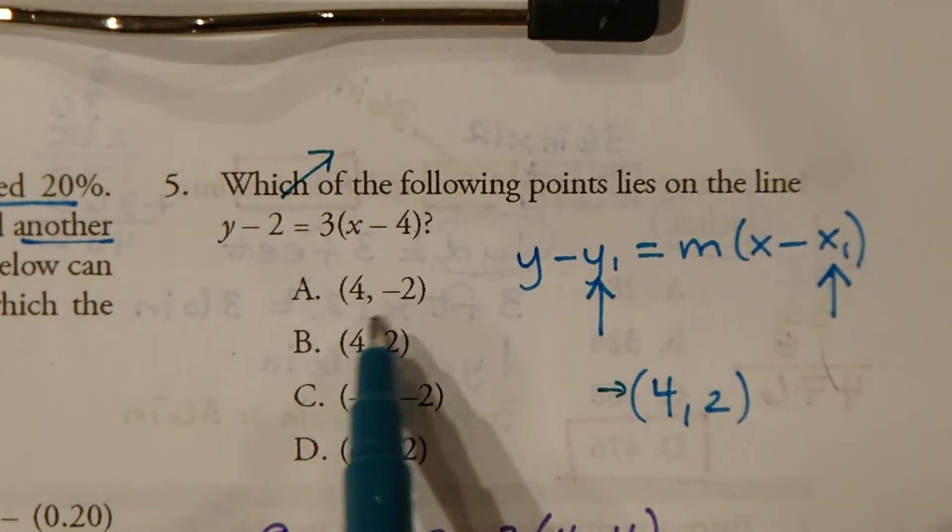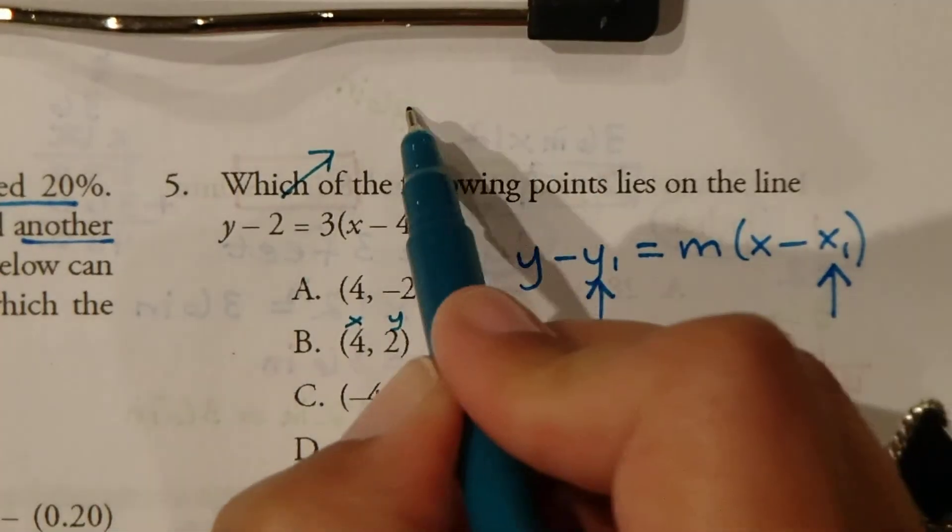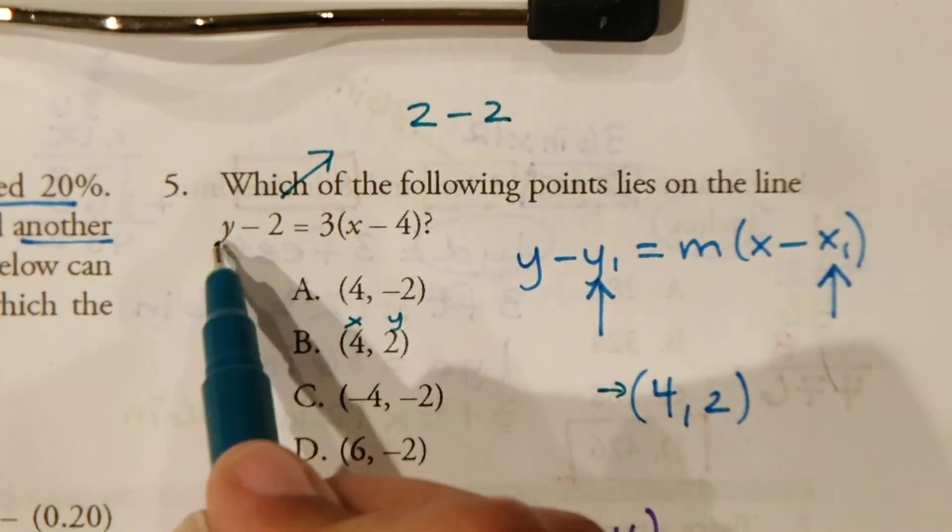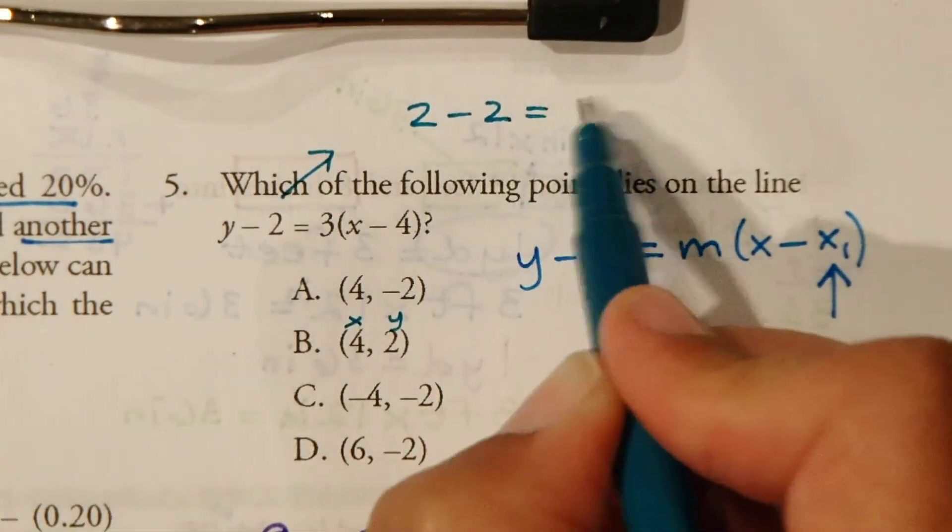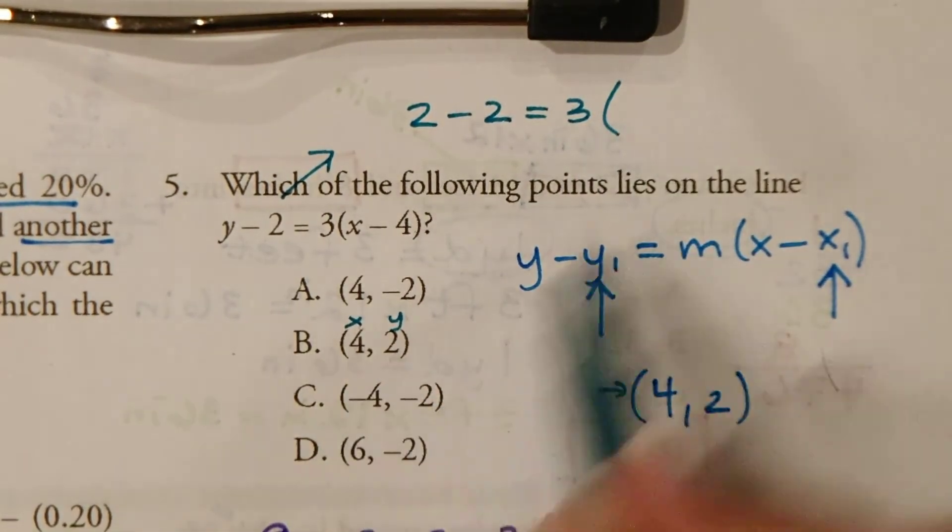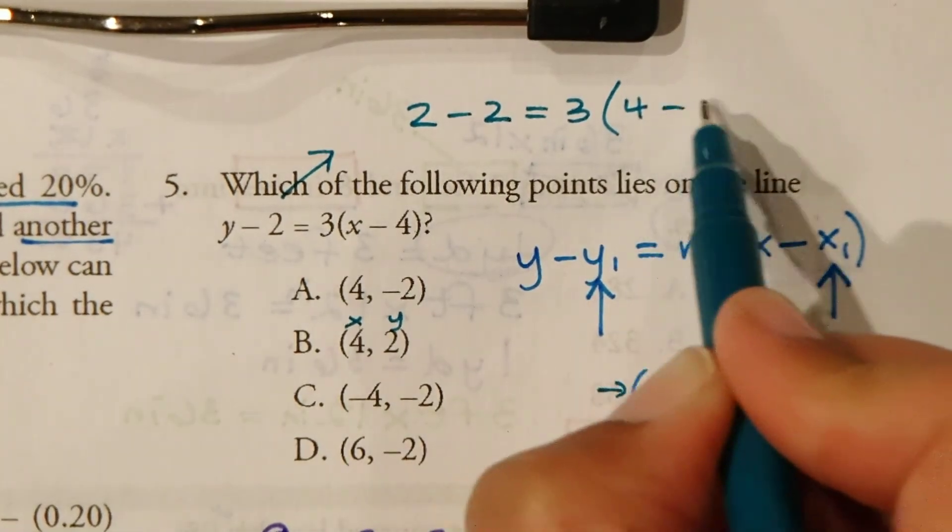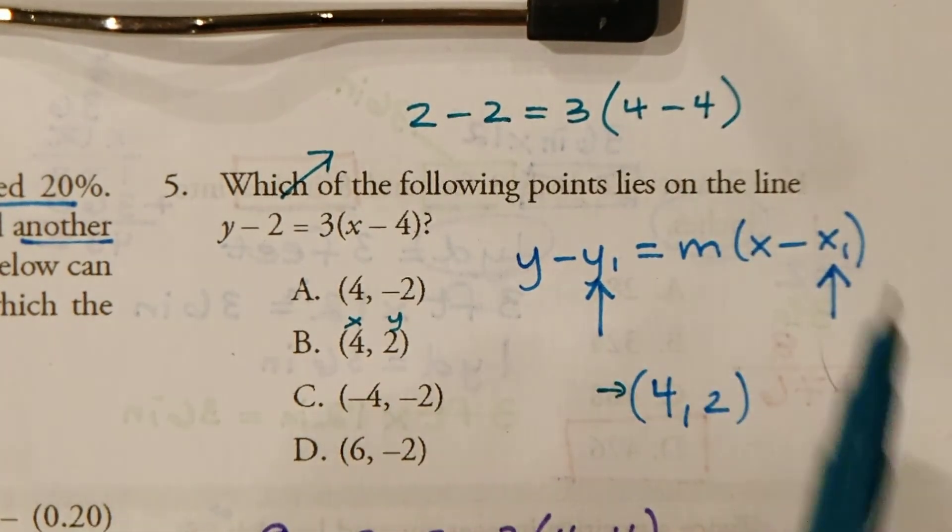So, our y-value, here's our x and our y. The y is 2. So, 2 minus 2, just plugging in for the y, equals 3 times x, which we know is positive 4, minus 4.